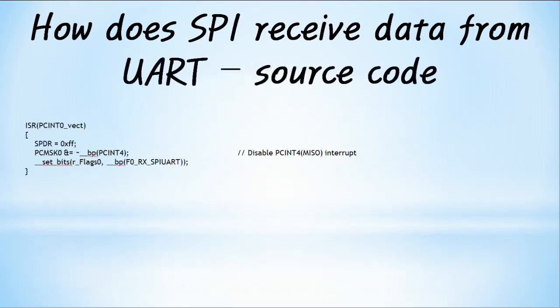This is the PCINT interrupt service routine source. The PCINT ISR is executed when MISO is idle and the start bit is detected. As shown in the figure, writing 0xFF to SPDR (the SPI transmit register) samples the signal input to the MISO pin. SPDR = 0xFF should be performed as soon as possible. Interrupt latency and time required for register evacuation vary according to compiler and processor.